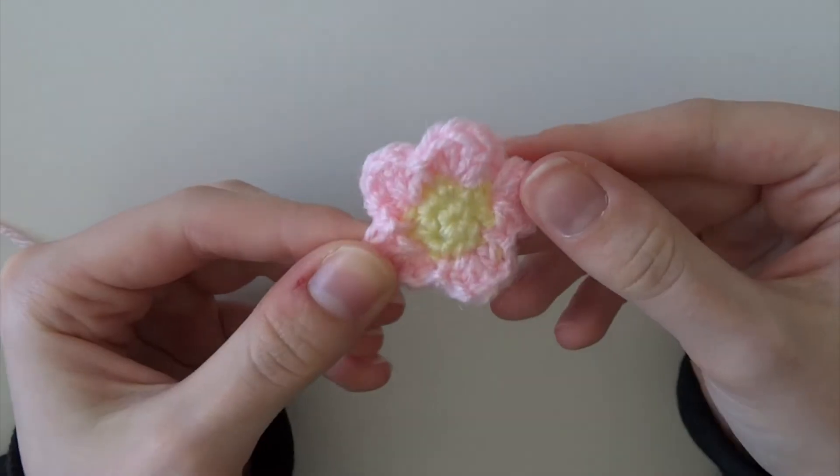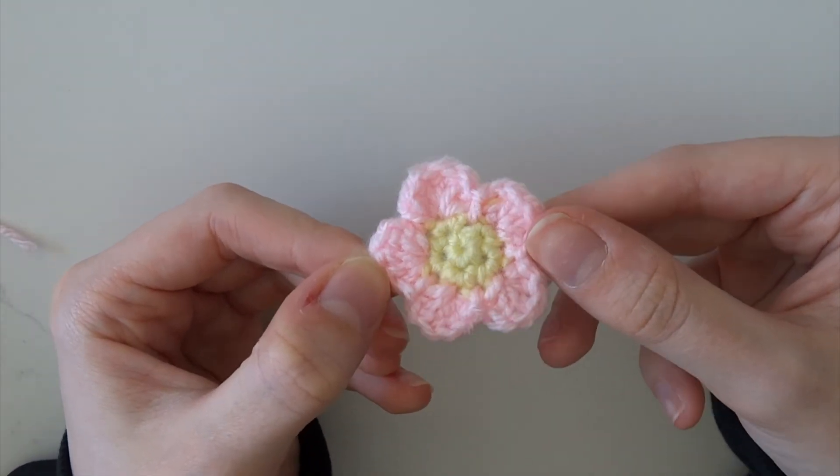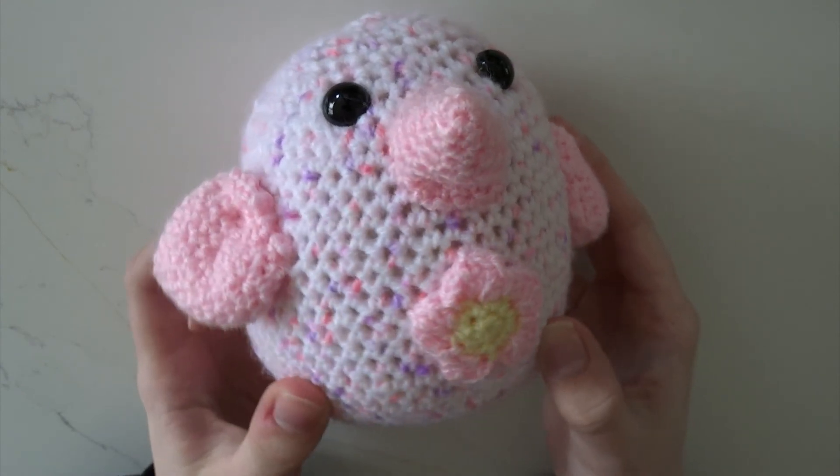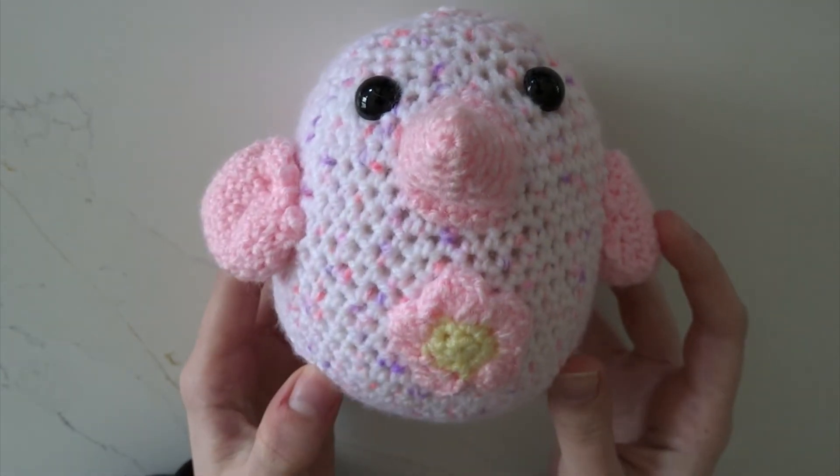And that is your little flower applique all finished. You can use this on any crochet project you make. I ended up using mine on a little bird that I was making. Thank you so much for watching, I'll see you in the next one. Bye guys!